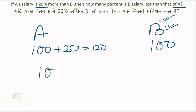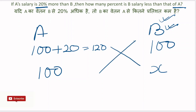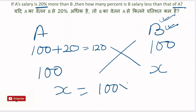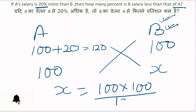Suppose agar A ka salary 100 hai, toh B ka salary kitna kam hai A se, kitna percent kam hai? Yahaan pe B ka value ko X maan lete hain. Cross multiplication karenge, X ka value aa jaega: 100 into 100 divided by 120.